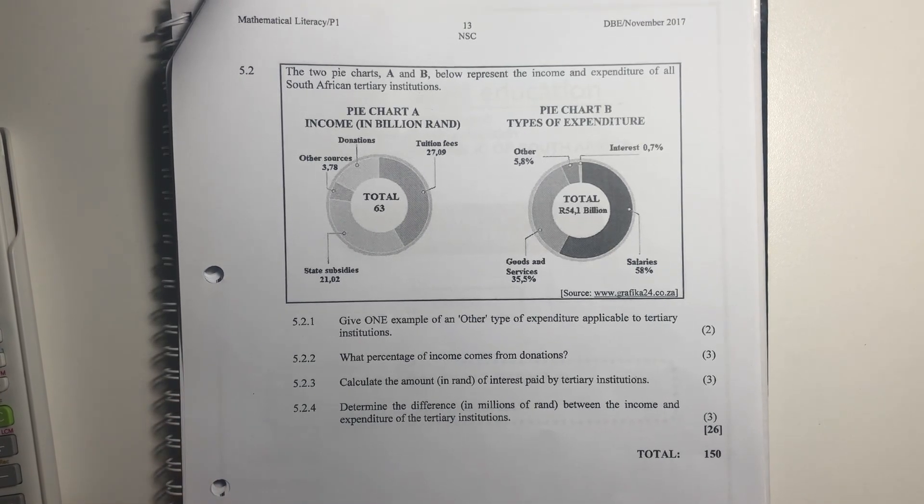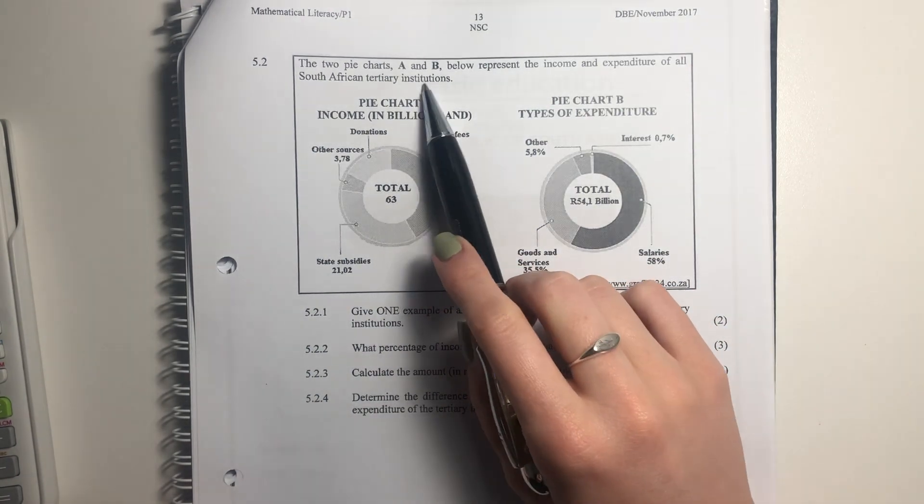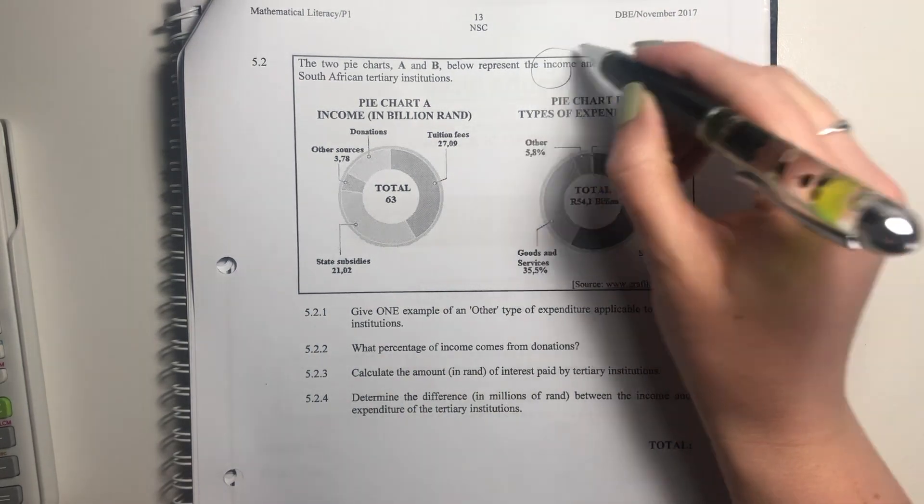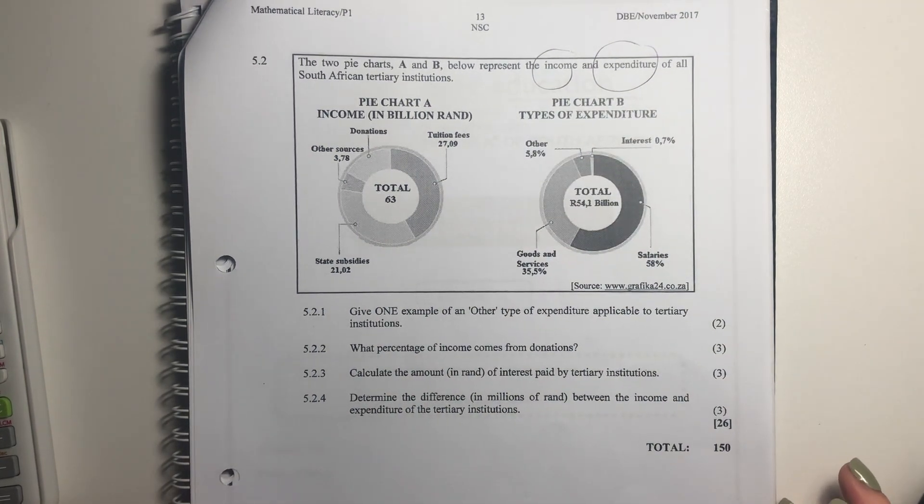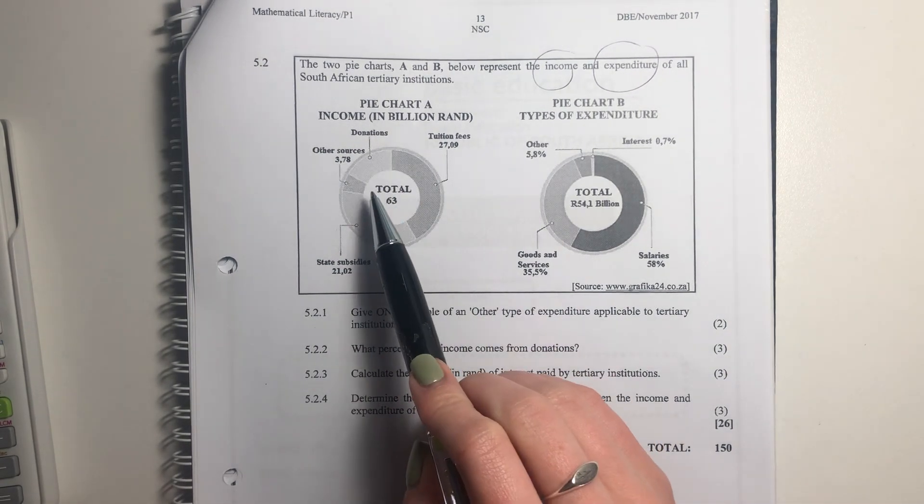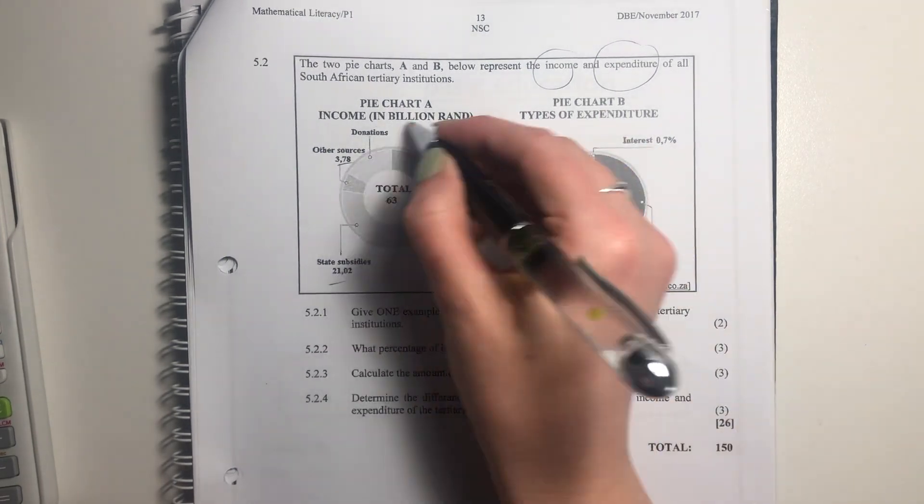Okay, let's look at the last question of this paper and the last video for this playlist. It says the two pie charts, A and B below, represent the income and expenditure of all South African tertiary institutions. Here they've kept it in billions because it says in billions.